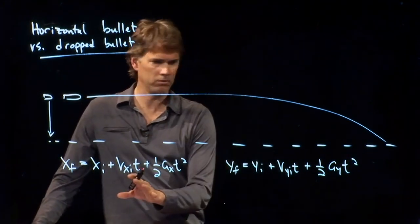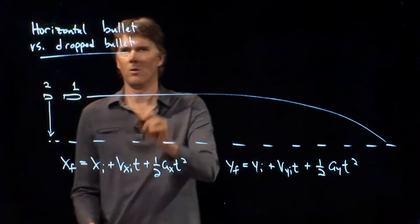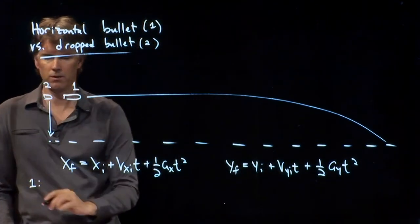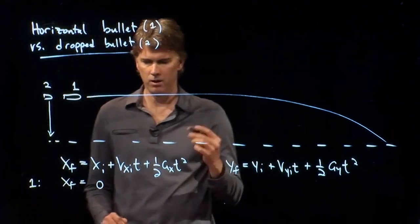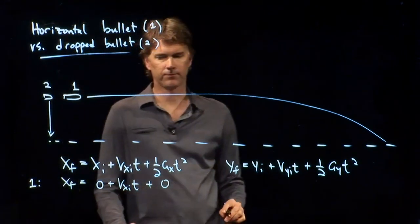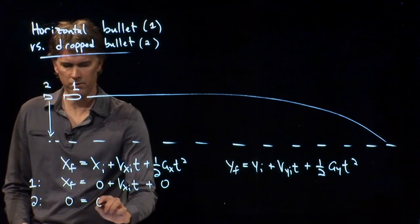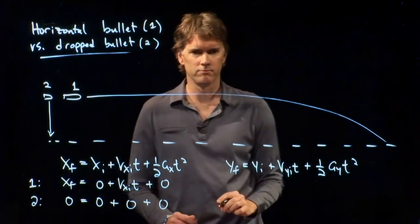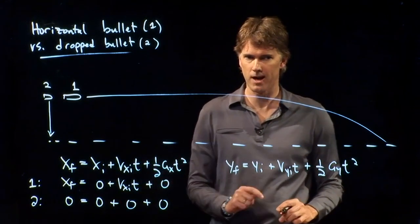Let's think about the x-equation. We'll call the horizontal bullet number one and the dropped bullet number two. For bullet number one, we have: x-final equals zero plus v_xi times t plus zero. For bullet number two, we have: zero equals zero plus zero plus zero. Not a lot of information in that equation — except to confirm that zero equals zero, no matter how many zeros you add to it.